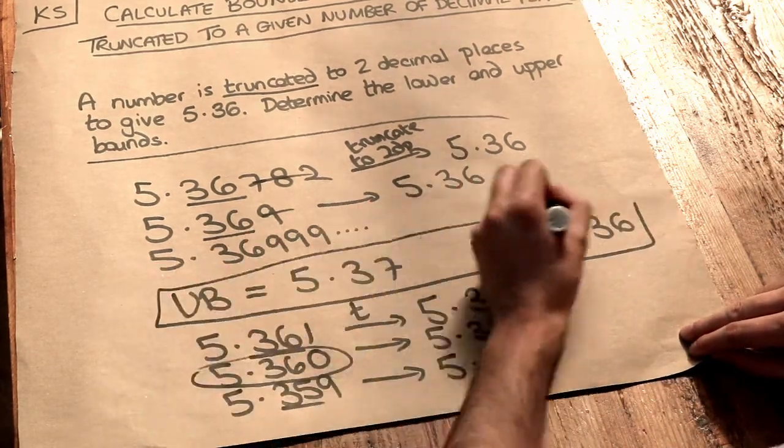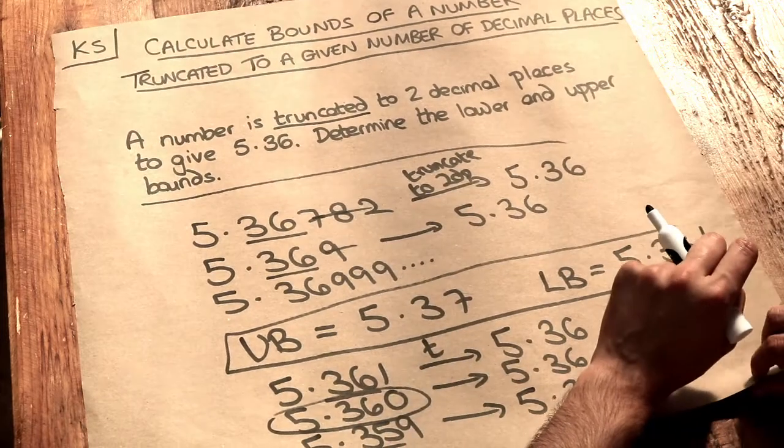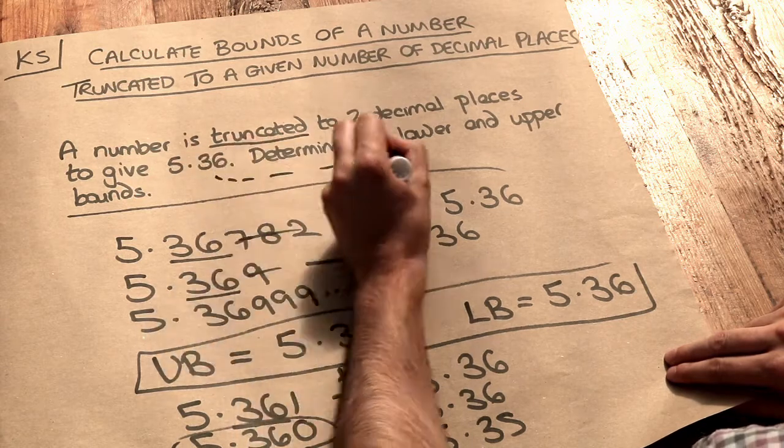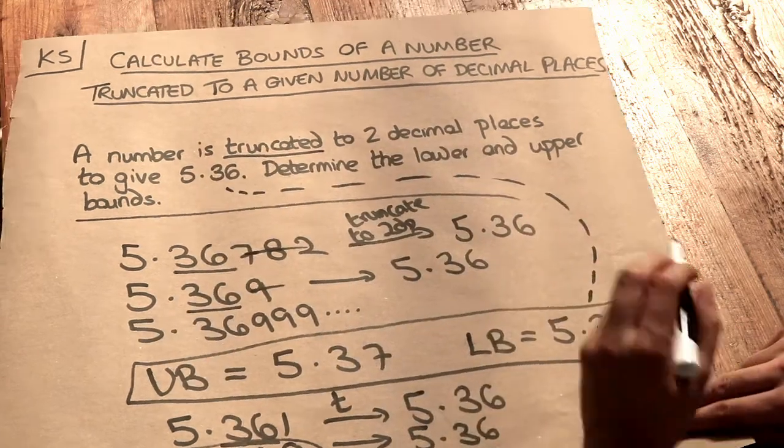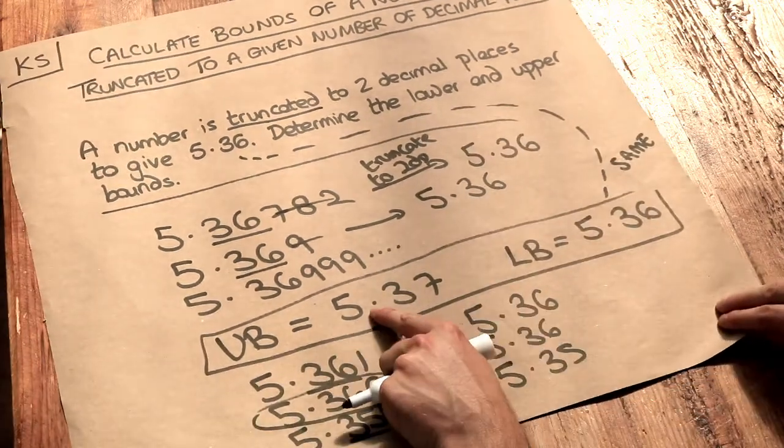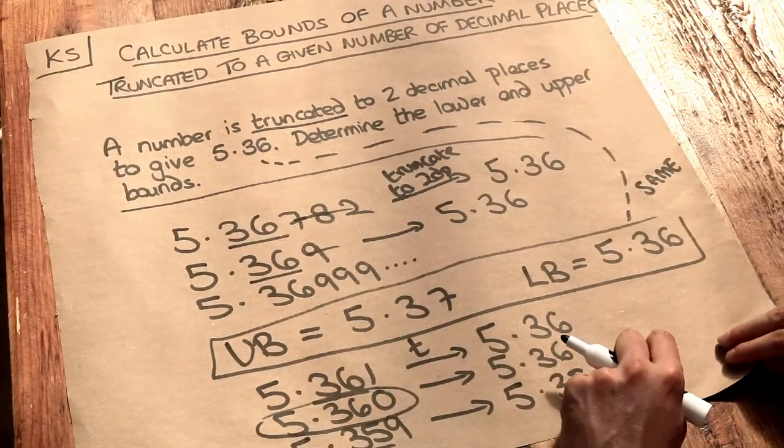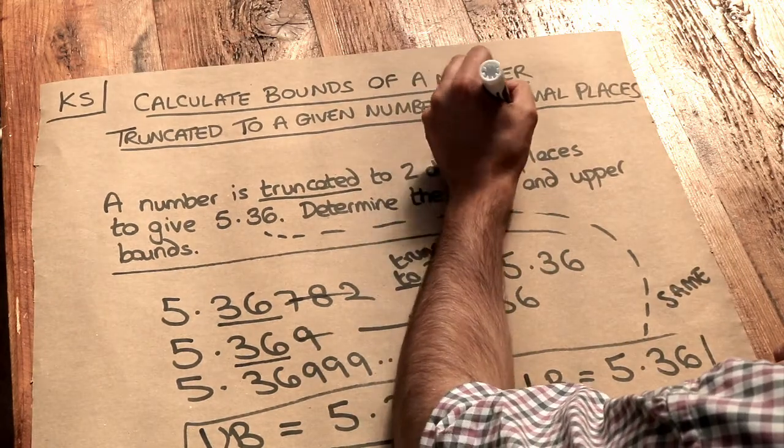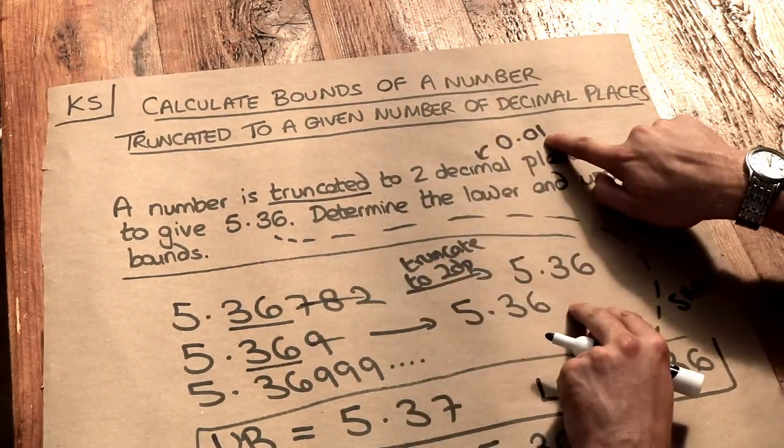And to summarize, when we truncate to a given number of decimal places, the lower bound will be the number itself. So this is 5.36, the lower bound will be the same. And to get the upper bound, we just add the accuracy. So if the accuracy is two decimal places, that accuracy is effectively 0.01, because that's the hundredths digit, it's the second digit after the decimal place.